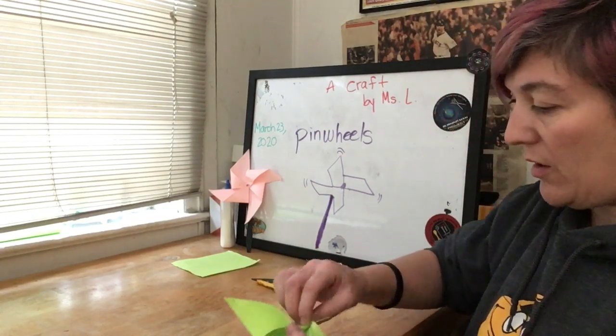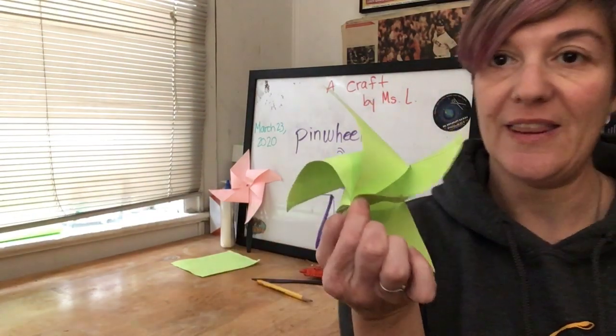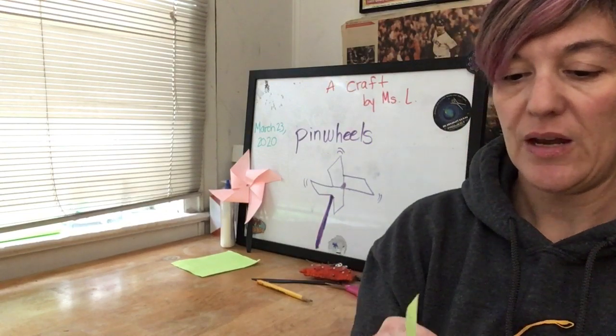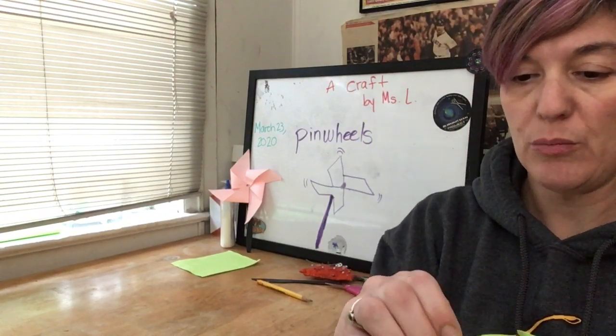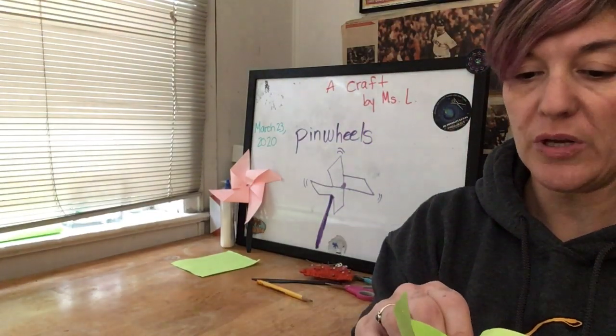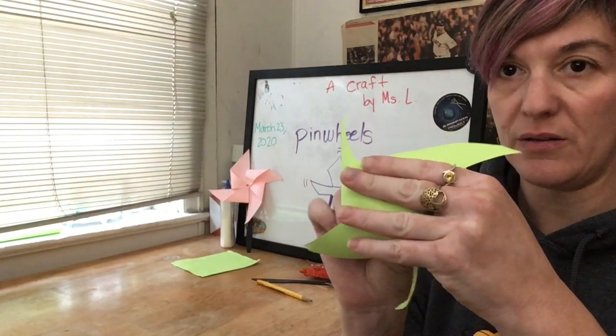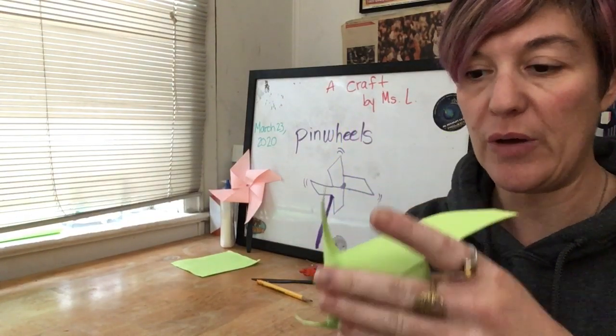Once you've got all four, it'll look like this. Now you take the bottom point and poke it through the cross in the middle and it should poke out the back.